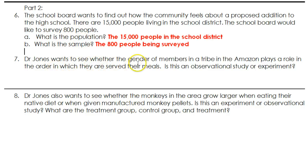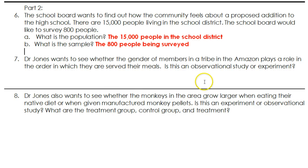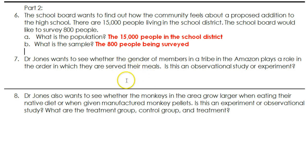Dr. Jones wants to see whether the gender of members in a tribe in the Amazon plays a role in the order in which they are served their meals. This is an observational study because the researcher is not subjecting the people to any experimental conditions — there's no treatment being imposed on anyone. Dr. Jones is just observing and recording what's happening anyway.